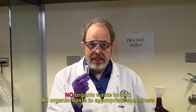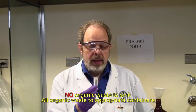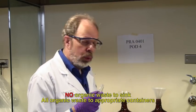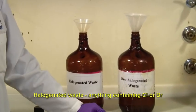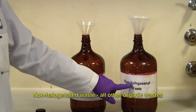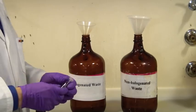The first thing that I need to say is that nothing organic goes down the sink. If it's an organic solvent, it will end up in one of these two waste containers: halogenated waste or non-halogenated. So if it's dichloromethane or anything with a halogen, it goes in here. Most things are non-halogenated; they'll go into this waste container.